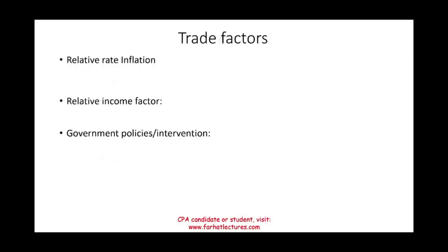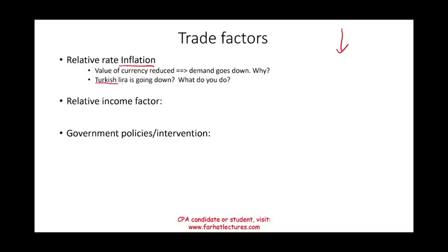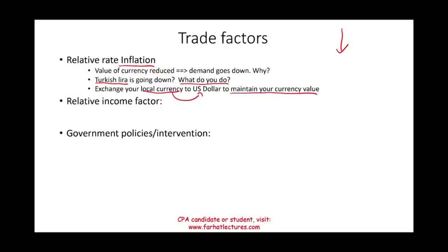The first trade factor is relative rate of inflation. In an inflationary environment, the value of the currency goes down. People holding that currency will try to convert it into another currency — they run away from it. Think of the Turkish lira: when it goes down in value, holders exchange it for U.S. dollars to maintain their purchasing power.